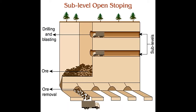Sub-level open stoping. In this mining technique, a series of horizontal tunnels, or sub-levels, are excavated one above the other to access different levels of a vertical ore deposit. At the bottom of the stope is a haulage tunnel, which is used to transport ore that collects at the bottom. Tunnels located near the bottom are used to drill and blast the ore, and when the roof of the deposit cannot be accessed anymore, another tunnel is excavated above this one.